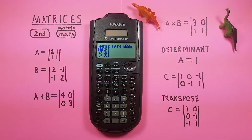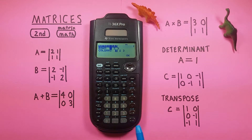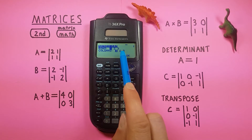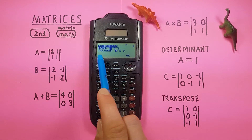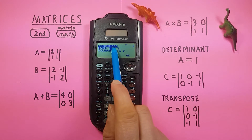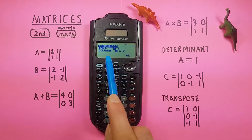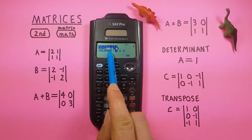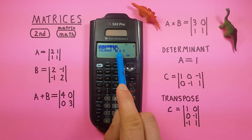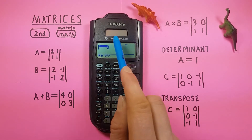To enter a matrix, highlight one and press enter to reach the dimension menu. This matrix is a two by two, so go right to highlight two for rows and press enter. Then for columns, go right to highlight two again and press enter twice to arrive at the blank matrix entry screen.